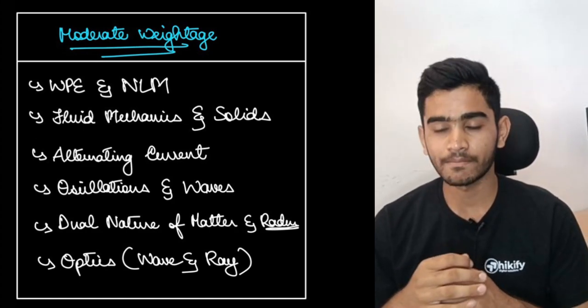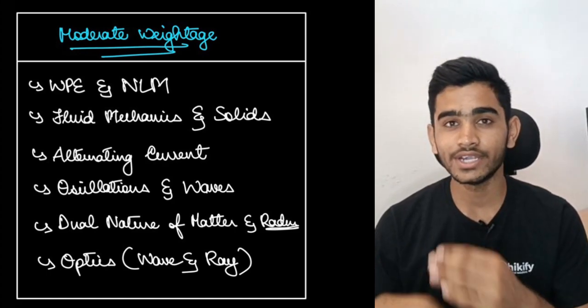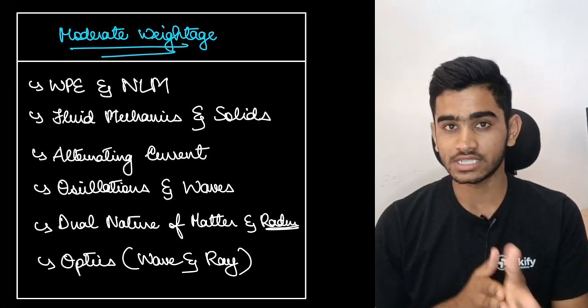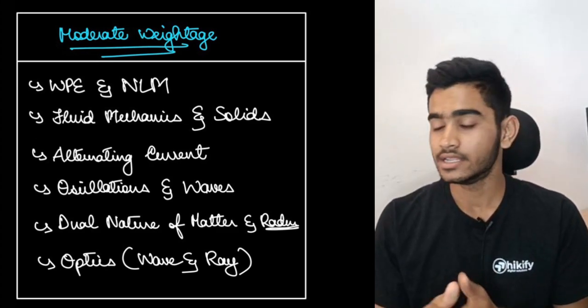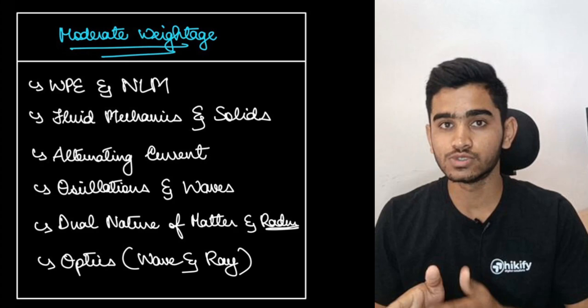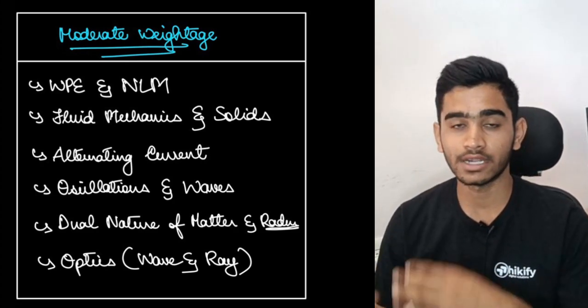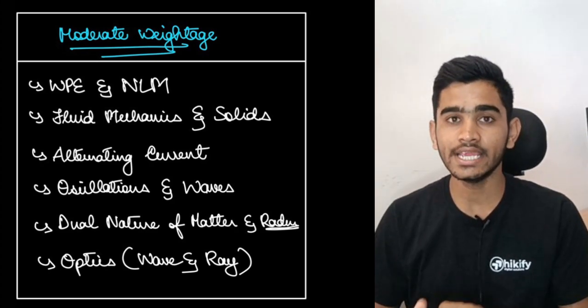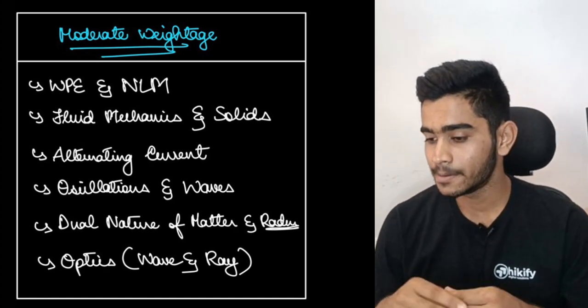It is dual nature of matter and radiation. This is again an easy unit to cover which majorly involves photoelectric effect and if you understand photoelectric effect better then this chapter again will be a smooth sail for you and I am sure you will be able to grab that two questions which come from this particular chapter by solving it very quickly and very precisely.